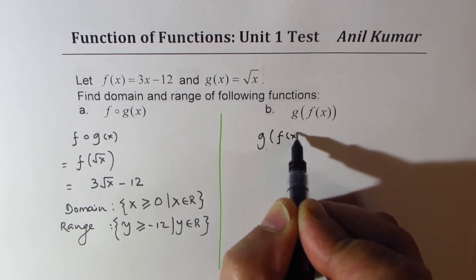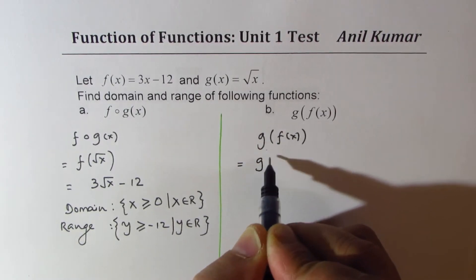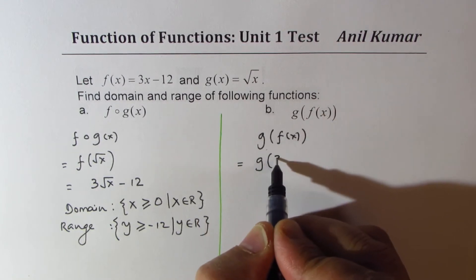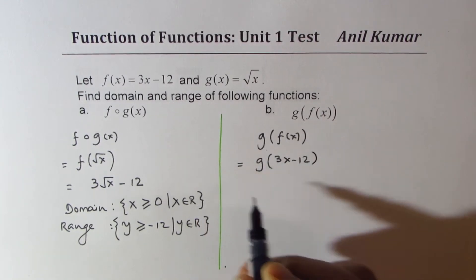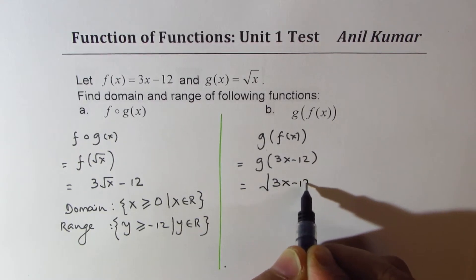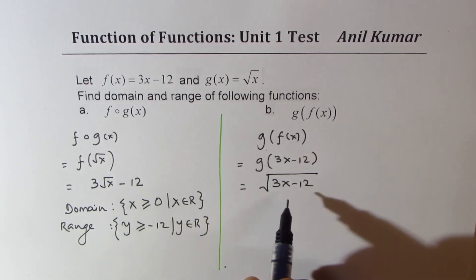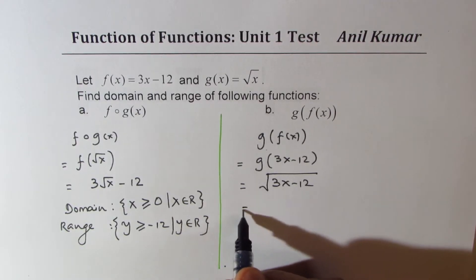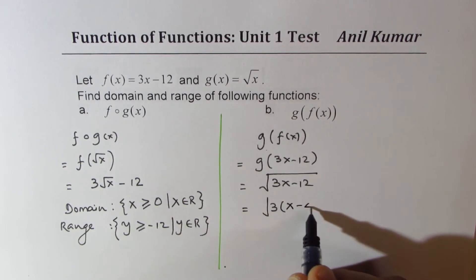Now, g of f of x is equal to g of 3x minus 12, which is square root of 3x minus 12. Now, in this case, what you could do is you could actually factor out 3, so we get square root of 3 times x minus 4.